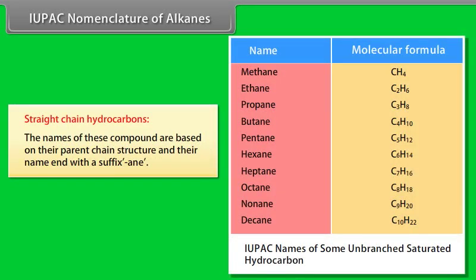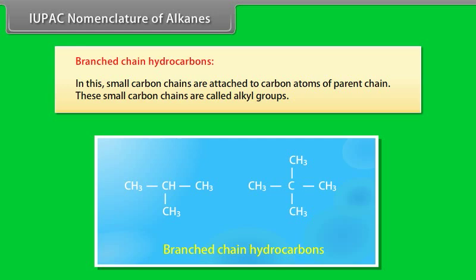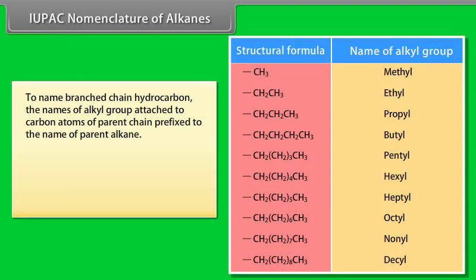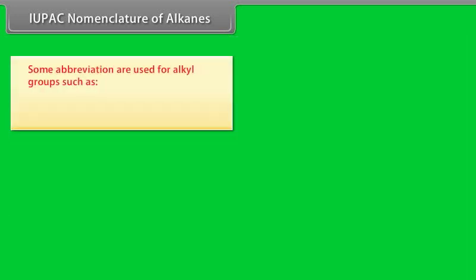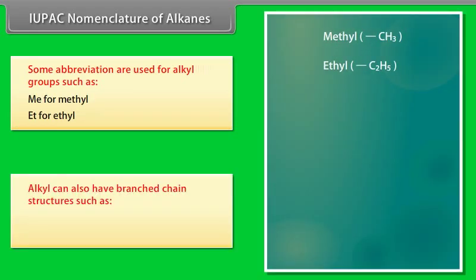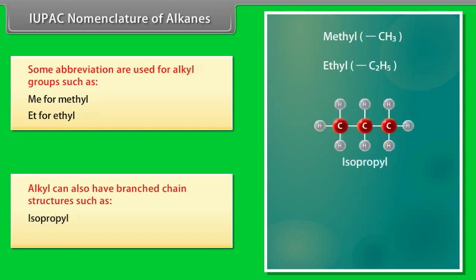IUPAC nomenclature of alkanes — straight chain hydrocarbons: The names of these compounds are based on their parent chain structure and their name ends with the suffix -ane. Branched chain hydrocarbons: small carbon chains are attached to carbon atoms of the parent chain; these are called alkyl groups. An alkyl group is formed from a saturated hydrocarbon by removing one hydrogen atom from carbon. To name an alkyl group, we substitute -yl. Abbreviations used: Me for methyl, Et for ethyl. Alkyl groups can also have branched chain structures such as isopropyl and tert-butyl.